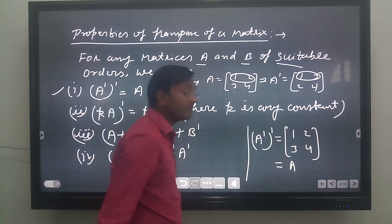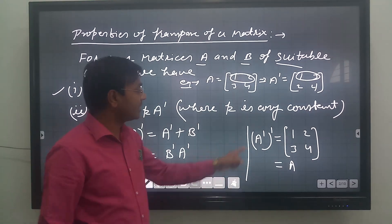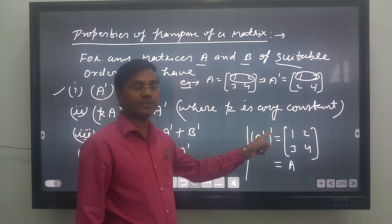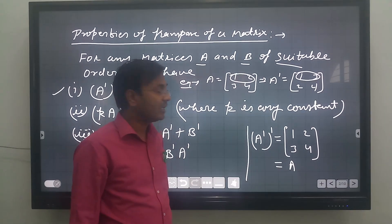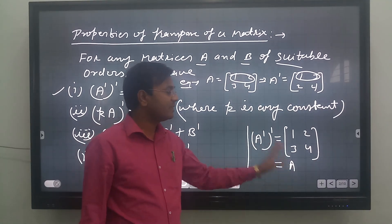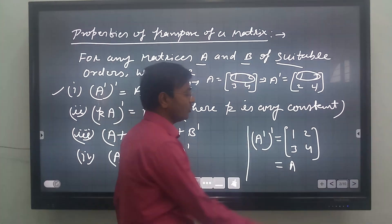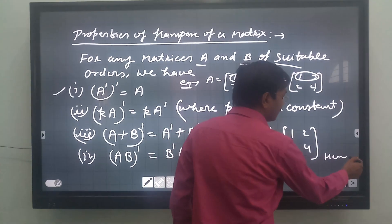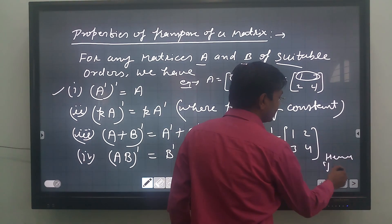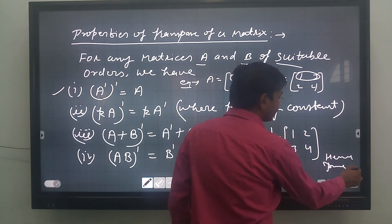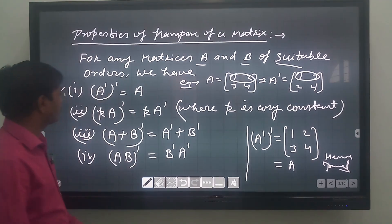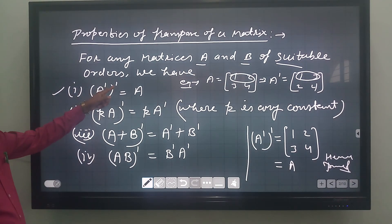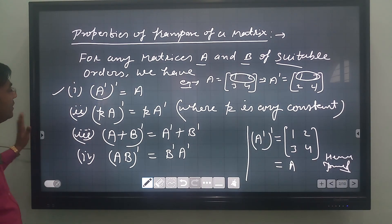So what we have seen is that the transpose of the transpose of a matrix is the matrix itself. Double transpose gives the same matrix. Hence proved. This was property one: transpose of a transpose of the matrix is the matrix itself.